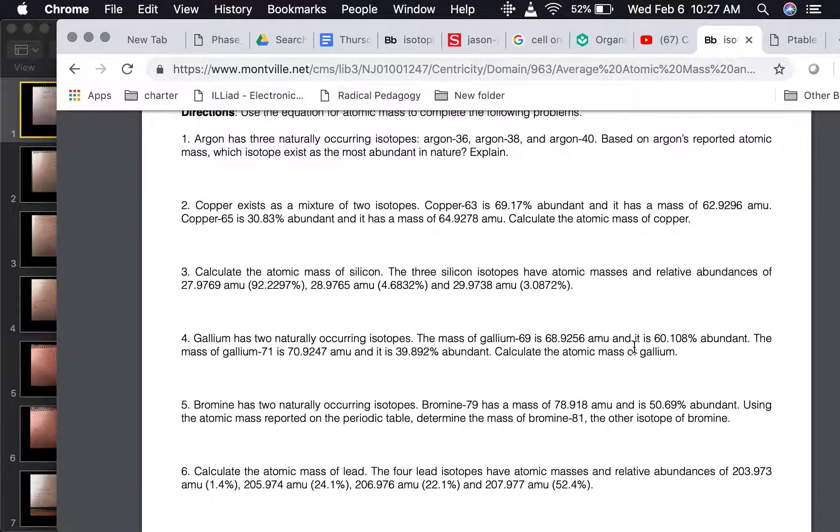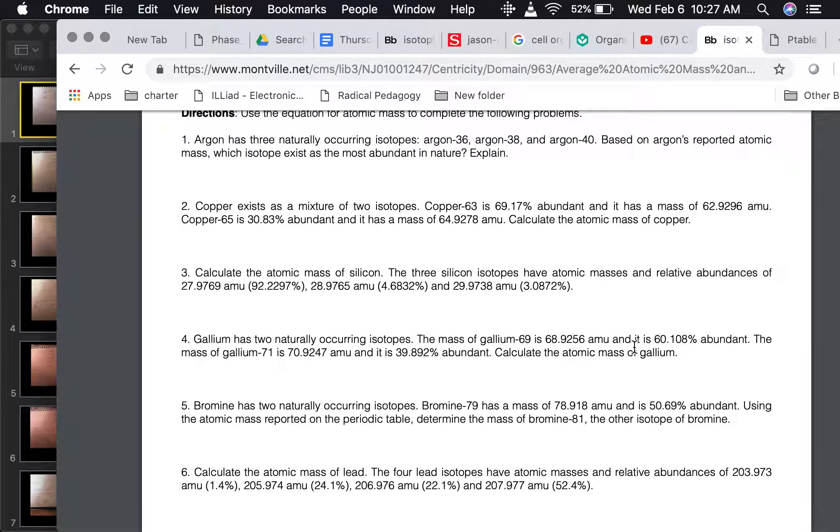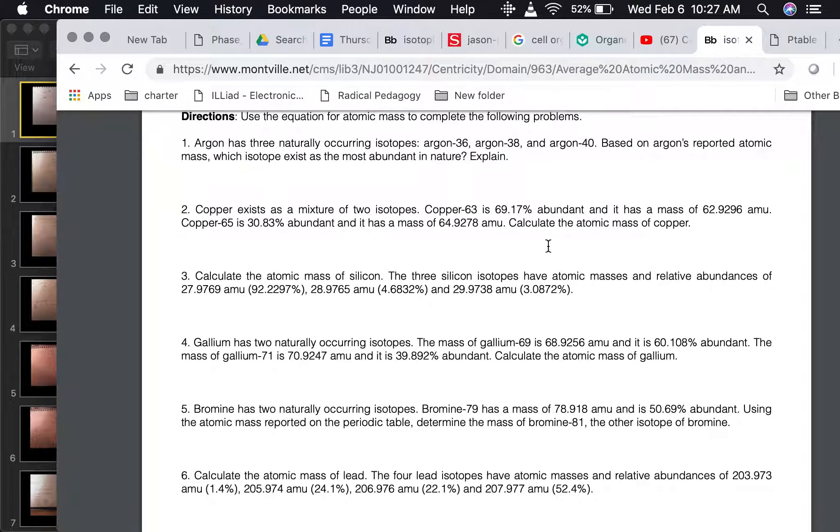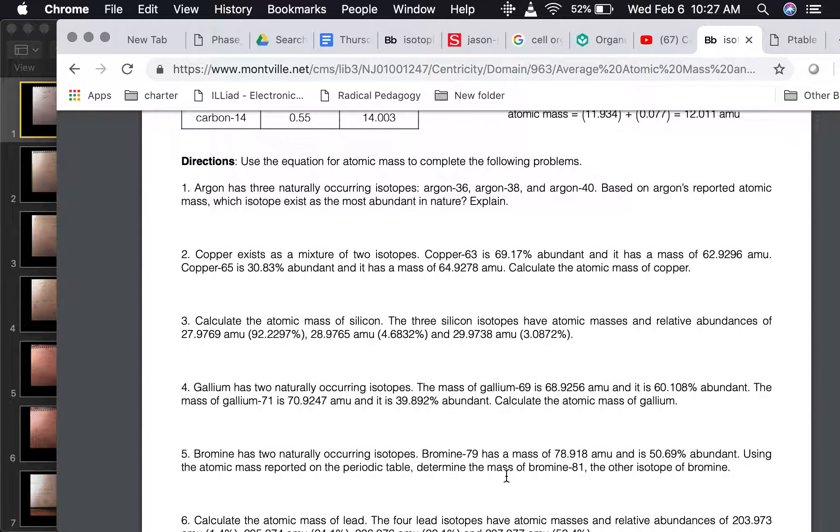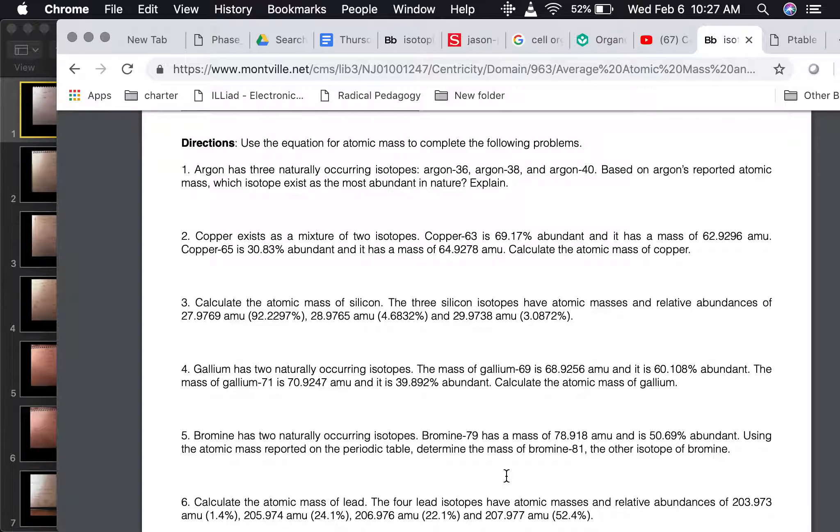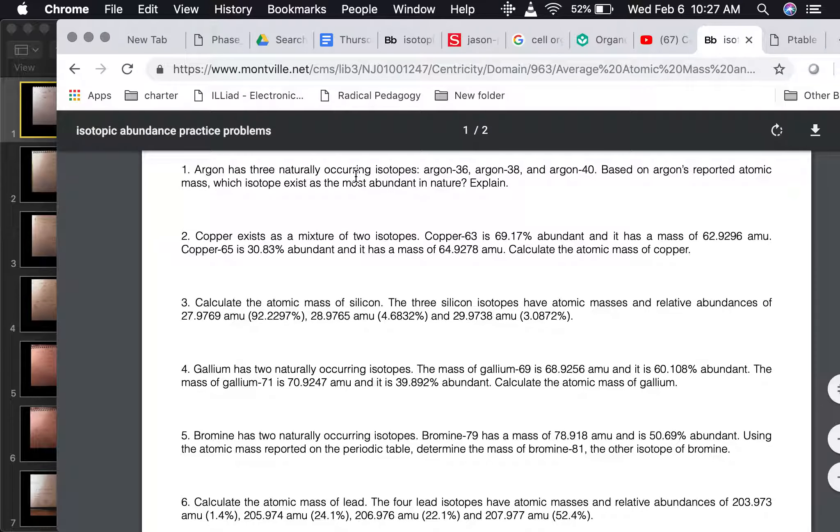These were the practice questions that you have. I would say the most complicated ones are probably number one and number seven. So we'll take a look at those. The first one was, argon has three naturally occurring isotopes, argon 36, 38, and 40. Based on argon's atomic mass, which isotope exists as the most abundant in nature?